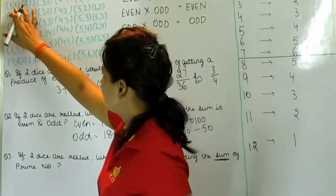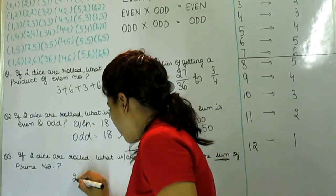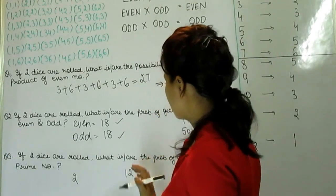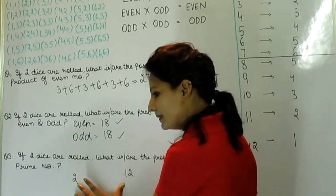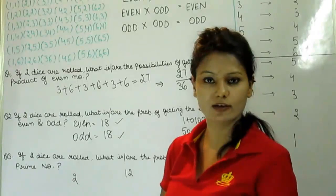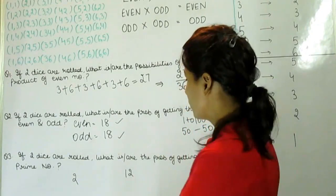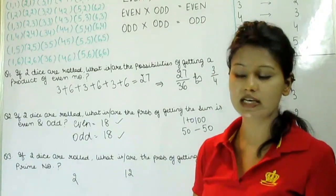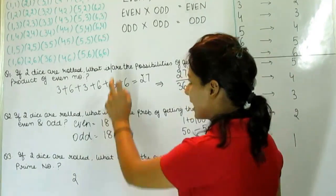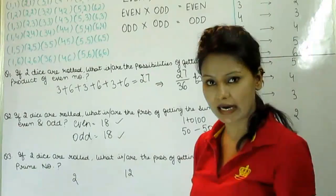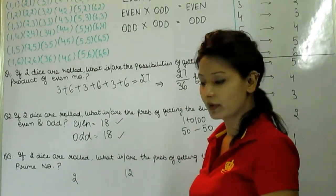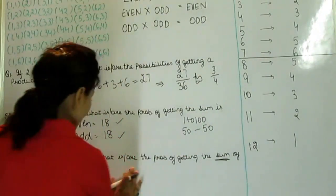So one and one is 2, and 6 and 6 is 12. Only these two types of prime numbers are required. Because we have a number of dice, prime numbers are a lot. But with dice, we have a last sum of 12. So the second number of dice is 2 and 12. Prime numbers are up to 12.